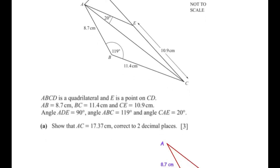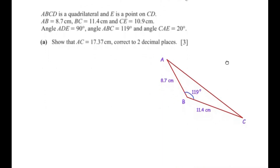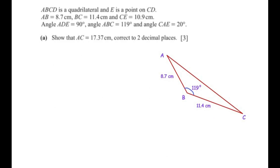Triangle ABC is drawn with the given side lengths and angle. Since we need to find the length of AC, we have been given two sides — AB and BC — and an angle. The side opposite to the given angle is missing, so in this case we are going to use the cosine rule. I have explained how to decide between cosine and sine rule in a separate video you can check out.